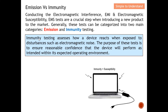Now let's move on to immunity. Immunity testing assesses how a device reacts when exposed to disturbances such as electromagnetic noise. For example, with a laptop as the DUT, we introduce electromagnetic noise to disturb it and observe whether it still functions. The purpose of this test is to ensure reasonable confidence that the device will perform as intended within its expected operating environment. If a newly introduced product cannot work in a certain environment, that is very bad for your company's reputation, so we must have confidence that it operates as intended.